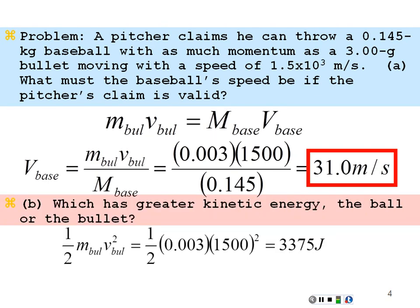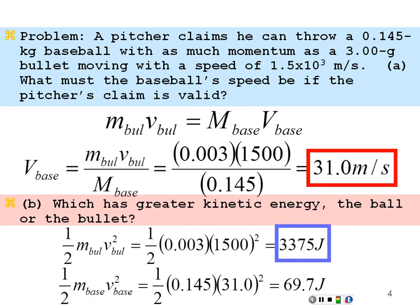What's likely is the bullet will have more kinetic energy. KE = ½mv²: for the bullet, ½ × 0.003 × 1500² = 3,375 joules. For the baseball, ½ × 0.145 × 31² ≈ 69.7 joules. The bullet has far more kinetic energy, so it will do more damage — likely getting lodged or going through — with energy dissipated as deformation and thermal heat.